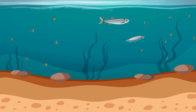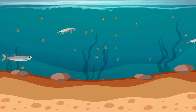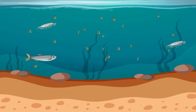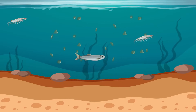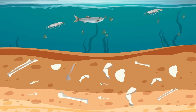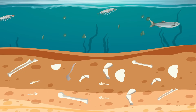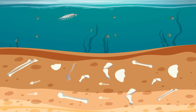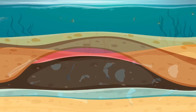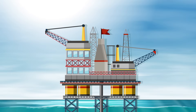Like all organisms, they eventually died. The remains of some organisms fell to the ocean floor and were buried in sediment. Over millions of years, the remains were buried in more layers of sediment, and heat and pressure beneath the earth's surface turned the remains into oil.